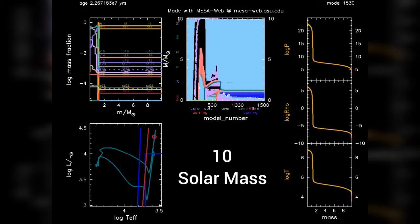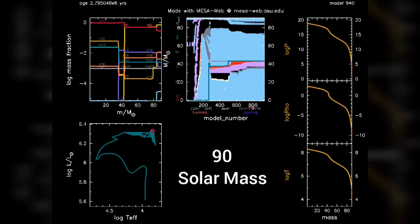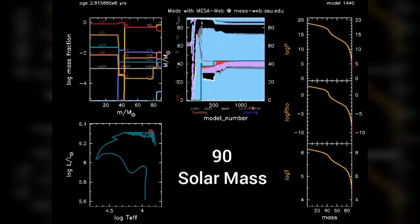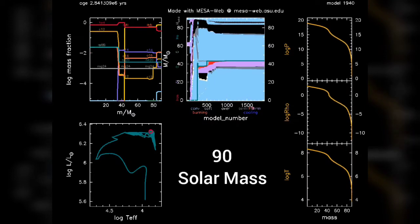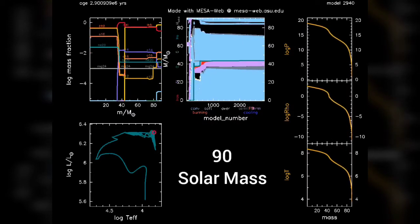And on the bottom left we have the popular HR Hertzsprung-Russell diagram, which has temperature on its x-axis increasing leftwards and luminosity on the y-axis. We can see the evolution of different stars on the HR diagram as a result of this simulation.